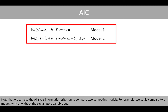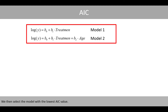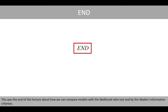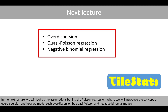Note that we can use the Akaike information criterion to compare two competing models — for example, we could compare two models with or without the explanatory variable age, then select the model with the lowest AIC value. This was the end of this lecture about how we can compare models with the likelihood ratio test and by the Akaike information criterion. In the next lecture, we'll look at the assumptions behind Poisson regression, where we'll introduce the concept of overdispersion and how we can model it using quasi-Poisson and negative binomial models.